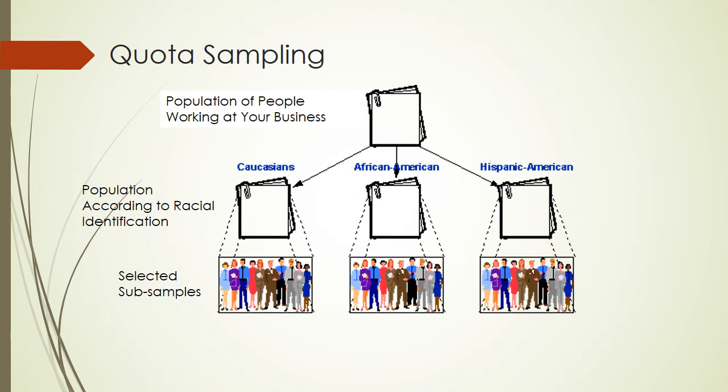Although random selection is often considered the most reliable way to choose a sample, we can also use something called quota sampling to attempt to achieve sample representativeness. For example, consider the people working at your business. You could probably divide them according to racial identification. Let's say at your particular business there are Caucasians, African Americans, and Hispanic Americans — one-third each. In that case, you could divide into those subgroups, or strata, and then select your sample from those strata.